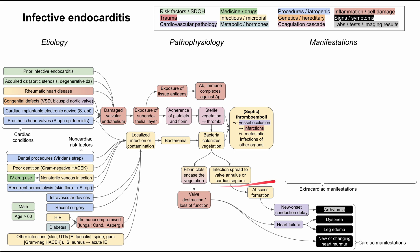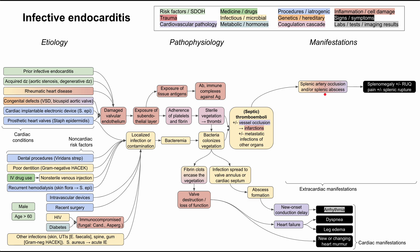Now for the extra-cardiac manifestations. Many other organs can be seeded with infection. Starting with the spleen: occlusion of the splenic artery can cause a splenic abscess or spleen infection, resulting in splenomegaly, right upper quadrant pain, and possibly splenic rupture. If septic thromboemboli reach the brain, you can have a septic embolic stroke, meningitis, encephalitis, or brain abscesses, presenting with neurological symptoms including paresis, weakness, visual deficits, seizures, and general stroke symptoms.